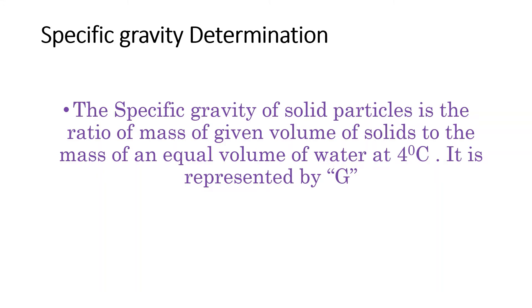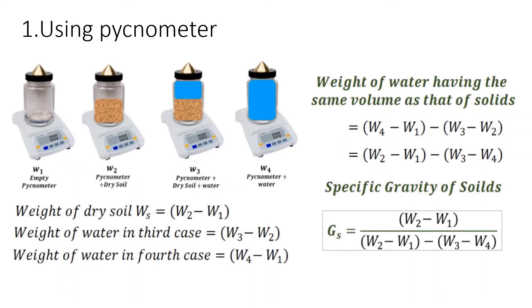The next experiment is specific gravity of soil. Specific gravity is the ratio of the mass of a given volume of solids to the mass of an equal volume of water at 4 degrees Celsius. This ratio of specific gravity is determined by two methods.